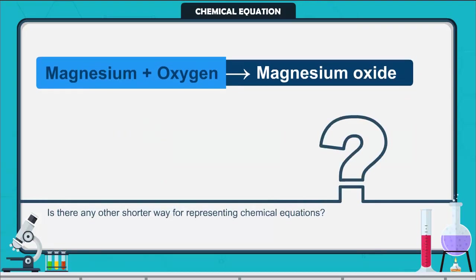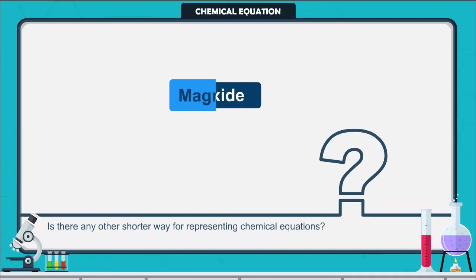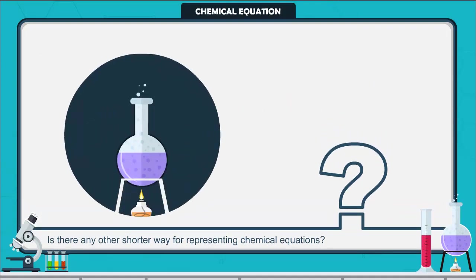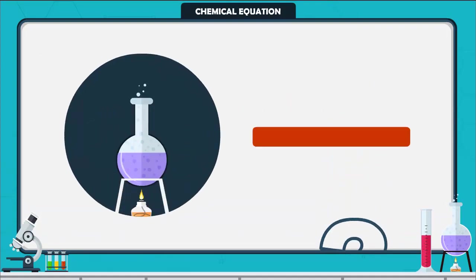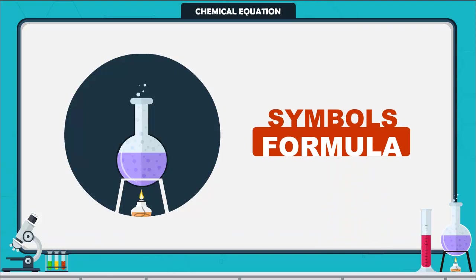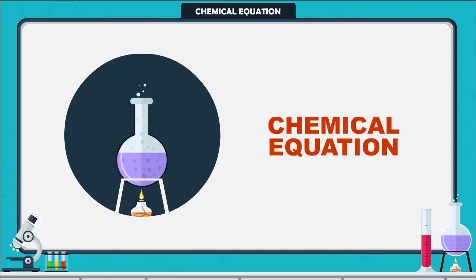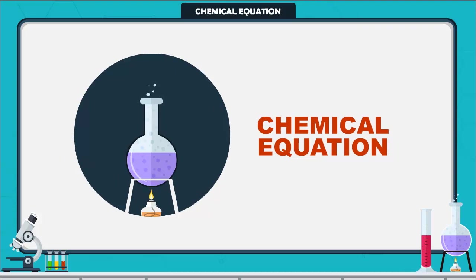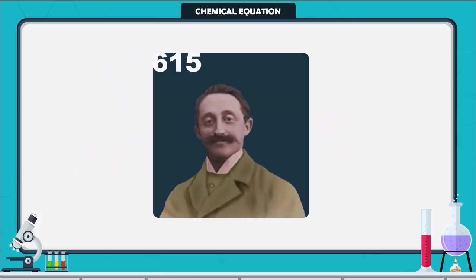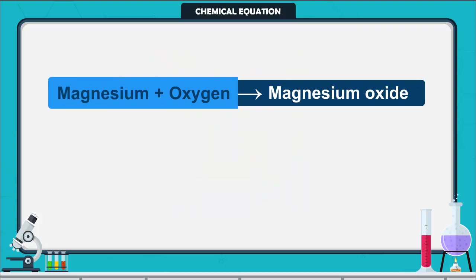Is there any other shorter way for representing chemical equations? Representation of a chemical reaction using symbols and formulae of the substances is called a chemical equation. Chemical equations were first formulated by the French chemist Jean Végane in the year 1615. If you recall the formulae of magnesium, oxygen, and magnesium oxide, the above word equation can be written in symbolic form.